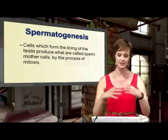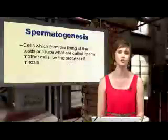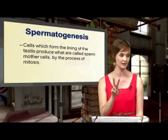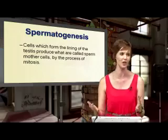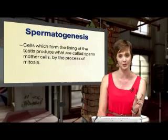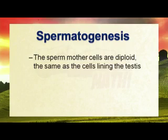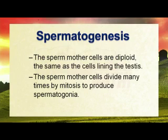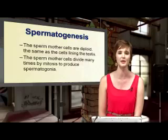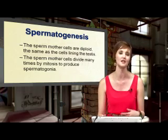We'll look at spermatogenesis step by step. First, the cells lining the testes produce cells called sperm mother cells by the process of mitosis — so these sperm mother cells are still diploid, 2N. You can write this in a flow chart; it helps a lot. These sperm mother cells then divide many times, still by mitosis, to produce spermatogonia — still diploid cells because we are still in the process of mitosis.